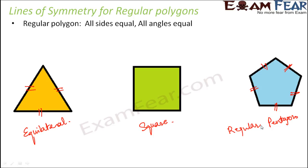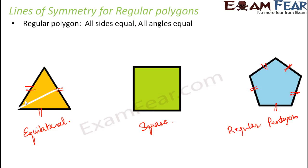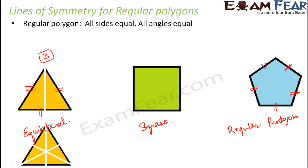Now let us look at the lines of symmetry for these regular polygons. Starting with the equilateral triangle — this line acts as a line of symmetry because it divides the triangle into two equal halves. Similarly, a second line and a third line also act as lines of symmetry. Three lines from the three vertices to the opposite side act as the three lines of symmetry. So total three lines of symmetry.